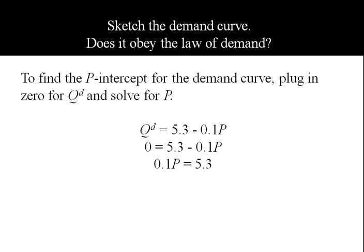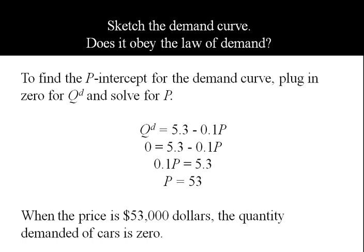I'll add 0.1P to both sides, divide by 0.1, and I get a price of 53. Remember, this means it's $53,000. When the average price is $53,000, the quantity demanded of cars is 0.